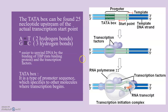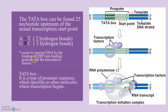The question is: why is the TATA box only A and T bases? A and T are attached by two hydrogen bonds, while G and C are attached by three hydrogen bonds. It clearly shows that G and C have much stronger bonds than A and T. So it is easier to unwind the DNA by the binding of TATA binding protein (TBP) and the transcription factors, since A and T is easier to unwind.